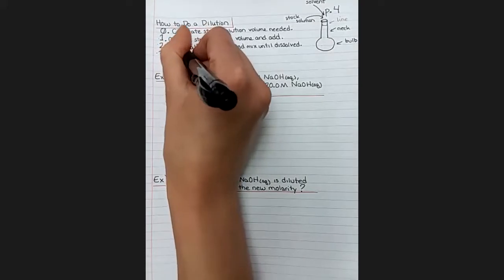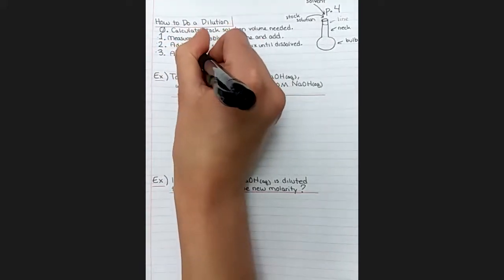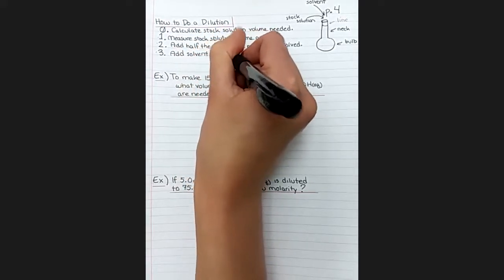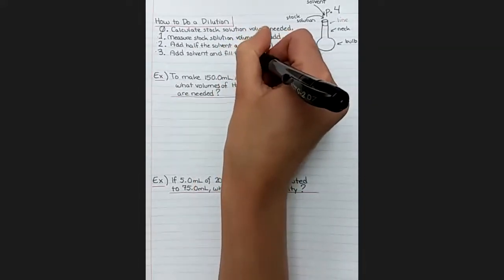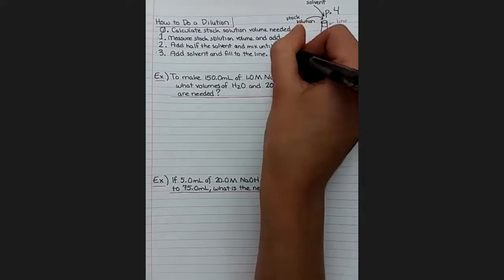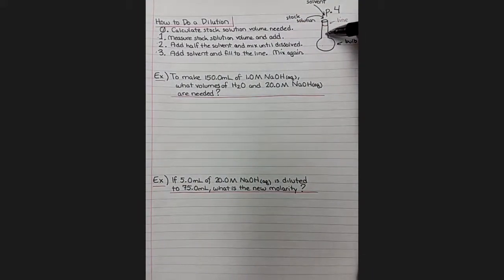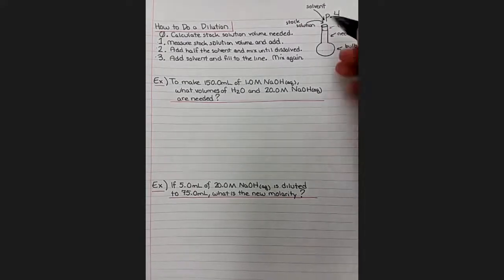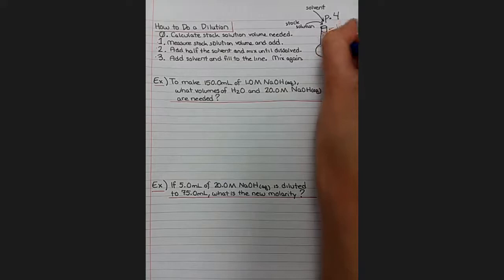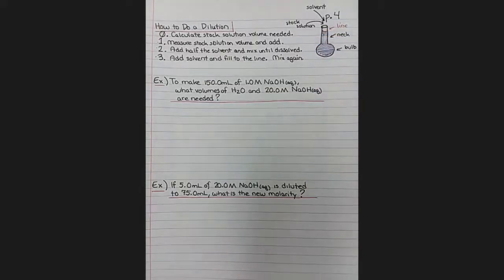So after we have sufficiently mixed what's in there, we will add the rest of the solvent and fill to the line. It's the only line. And then we'll mix again. We still want to mix when we finish to make sure it's totally homogeneous throughout, but again, it's very difficult to mix at the end because this part is very narrow, and there was only a little tiny bubble of air space available, so it takes quite a lot of effort to mix. So you want to mix as much as possible before the liquid fills into the neck.